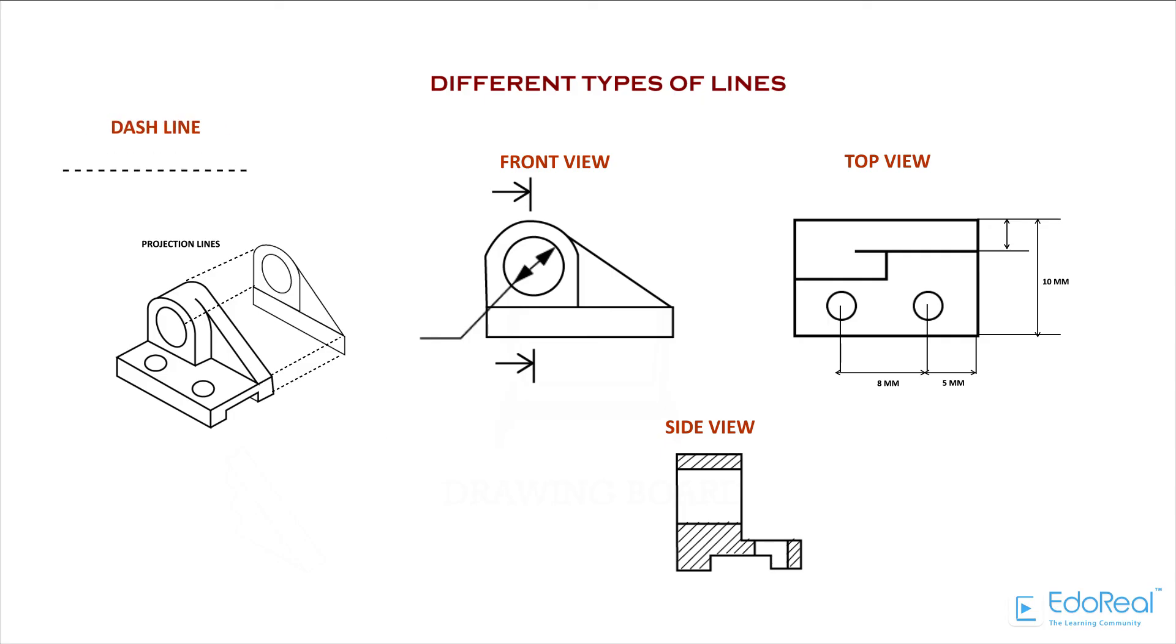Dash Line. This line is used to show hidden edges of the main object.